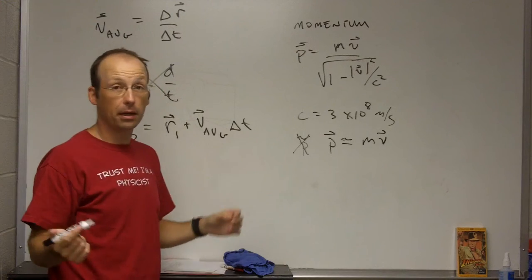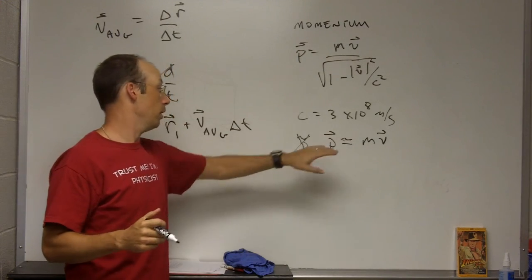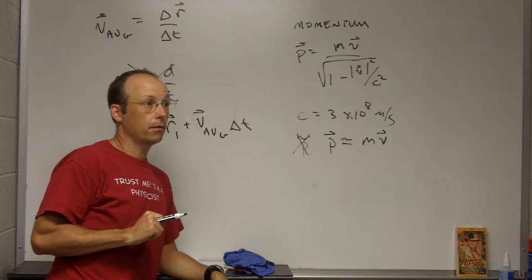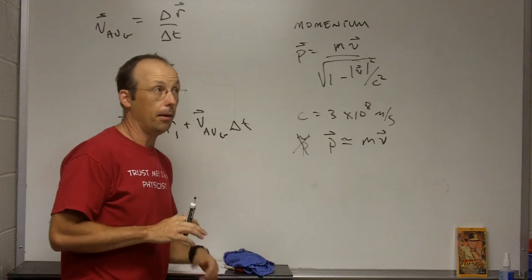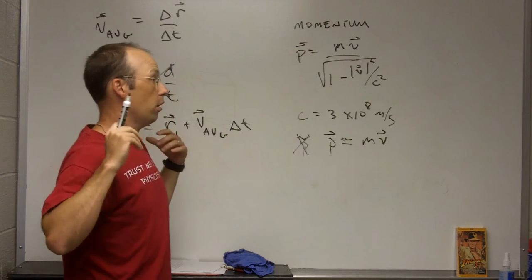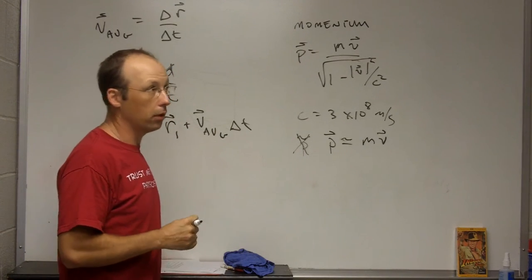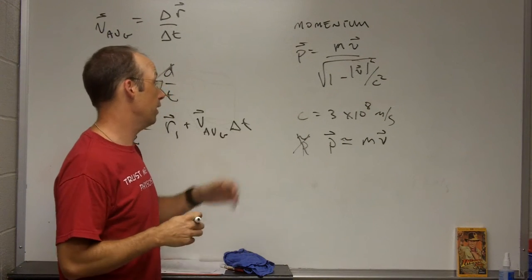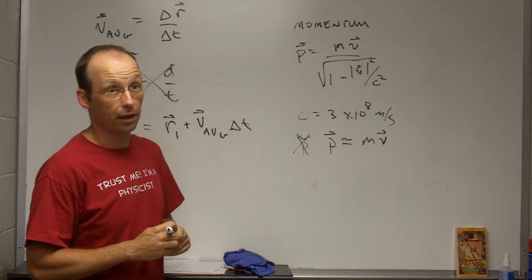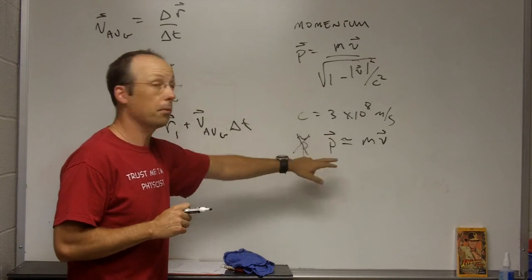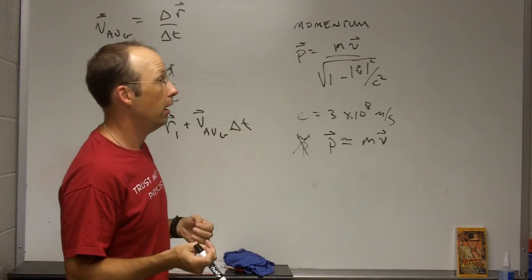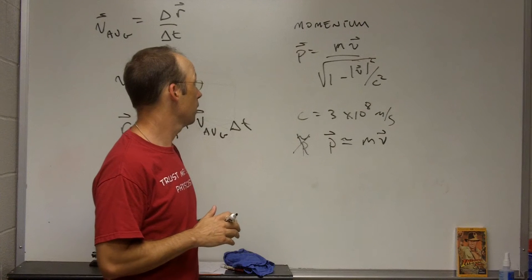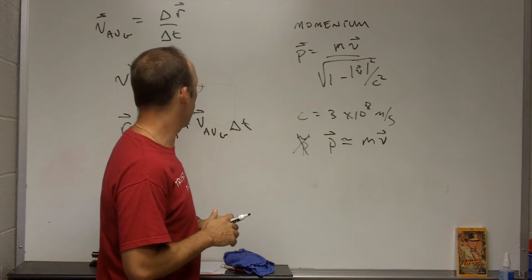If you're dealing with things going close to the speed of light, use this. Otherwise, use this. How close does close to the speed of light have to be? Well, it depends on how good you want your answer to be. I don't think it matters in any case for a bullet, but if you have something going a tenth of the speed of light, 3 times 10 to the 7th meters per second, you could get away with this formula. If you want it to be a better answer, you'd use this formula. It just depends. That's chapter 1.